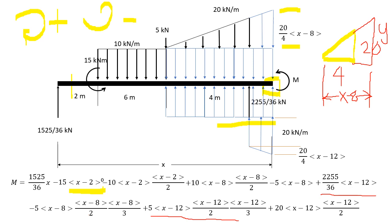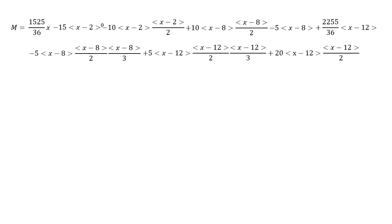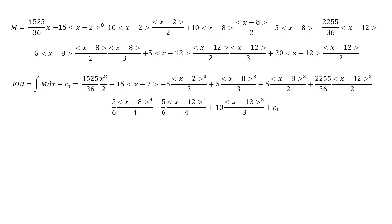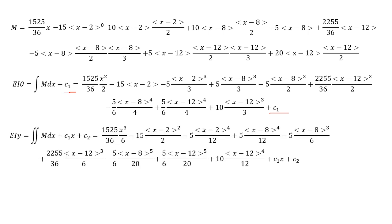That gives us our general moment equation. You can simplify and then integrate it — this is simple polynomial integration. When integrating to get EI times theta (the slope equation), do not forget the arbitrary constant C1. After simplifying while integrating, integrate again to get EI times Y. Do not forget C1 times X plus C2. This is now your equation for the deflection.